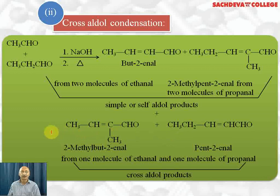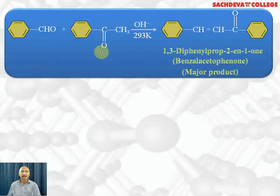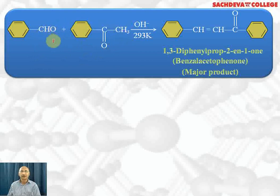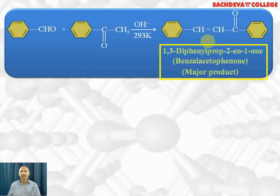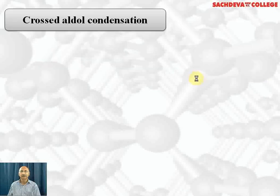This is called cross aldol condensation, where two different aldehydes react in different ways resulting in four products. Benzaldehyde reacts with acetophenone: benzaldehyde does not have alpha hydrogen, but acetophenone has alpha hydrogen, so its carbanion attacks the carbonyl group of benzaldehyde. Followed by dehydration, this results in the formation of 1,3-diphenylprop-2-en-1-one, also called benzalacetophenone, which is the major product.